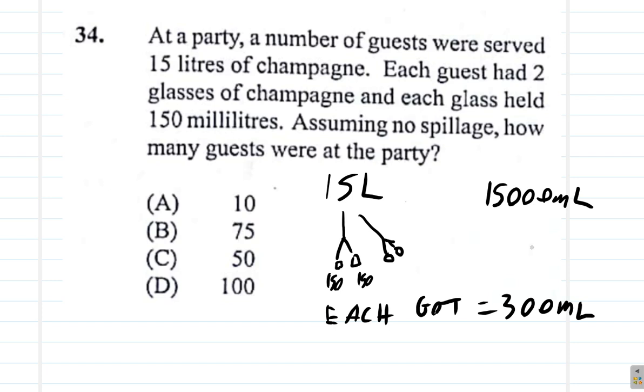15,000 milliliters available were given. Each guest had 300 milliliters, so to find the number of guests you can say how many 300 milliliters are there in 15,000 milliliters? So you're going to divide. It's going to be 15,000 divided by 300.